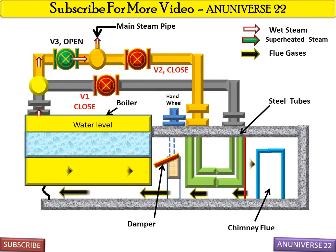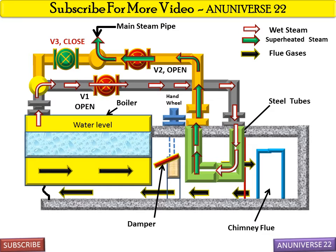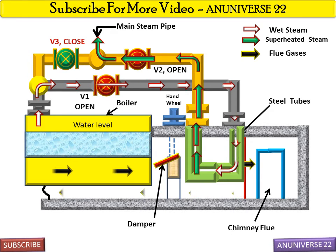For getting superheated steam, the process is different. Valve V1 and V2 are open and valve V3 is closed. This is the case when steam is passed through the superheater and the superheater is in action. When flue gases flow and wet steam from the boiler passes through valve V1, it goes through the intake header to the outtake header. The green arrow then shows the superheated steam passing through valve V2 and finally through the main steam pipe. This is how wet steam is converted into superheated steam by taking heat from the flue gases.